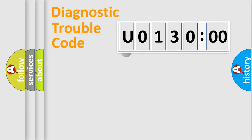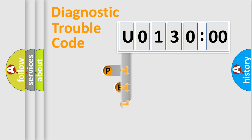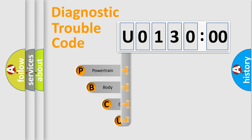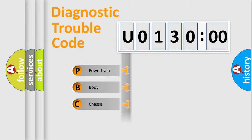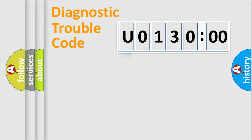First, let's look at the history of diagnostic fault code composition according to the OBD2 protocol, which is unified for all automakers since 2000. We divide the electrical system of the automobile into four basic units: Powertrain, Body, Chassis, and Network.